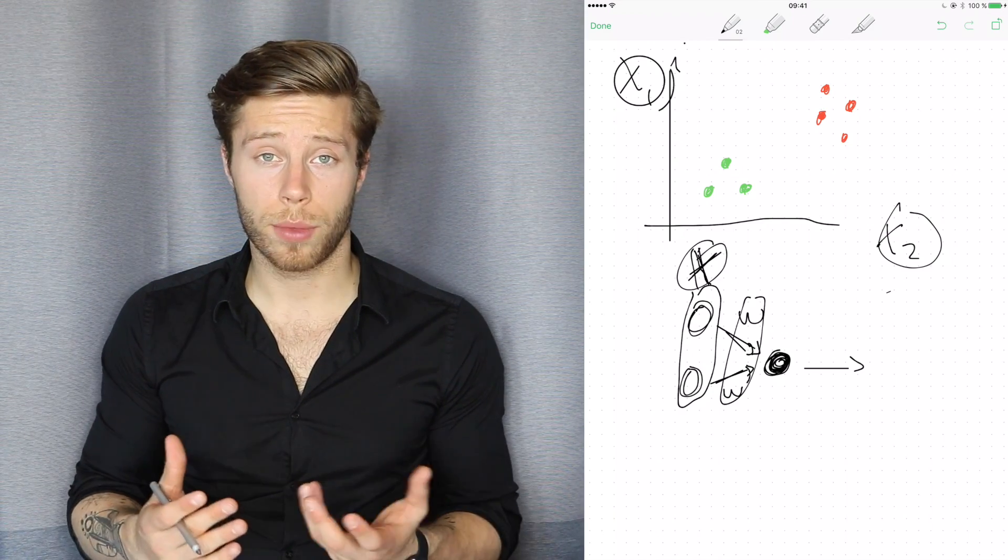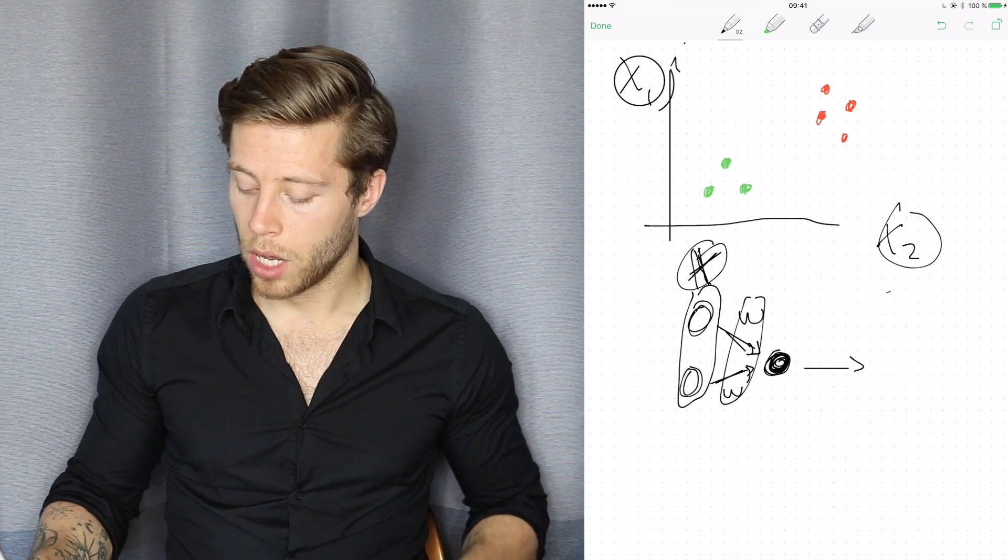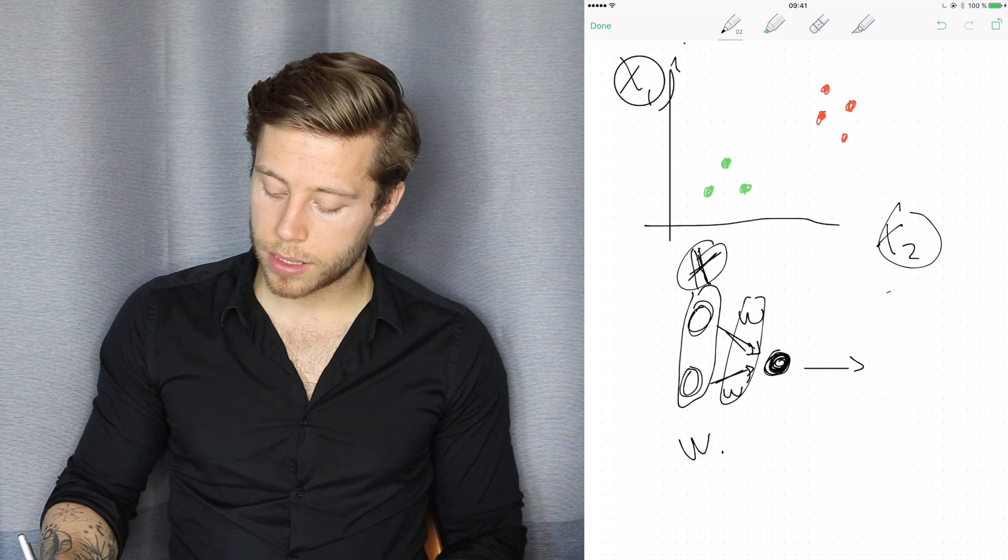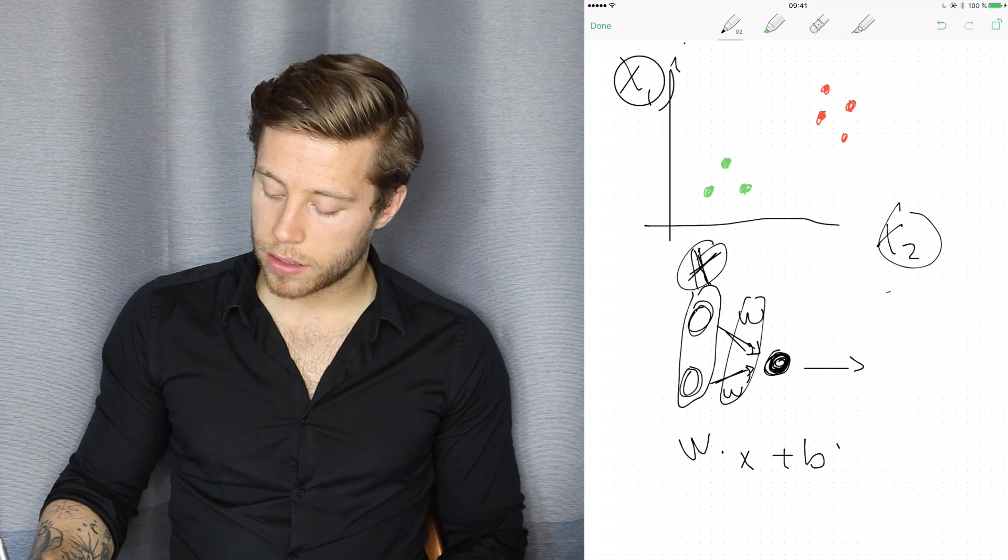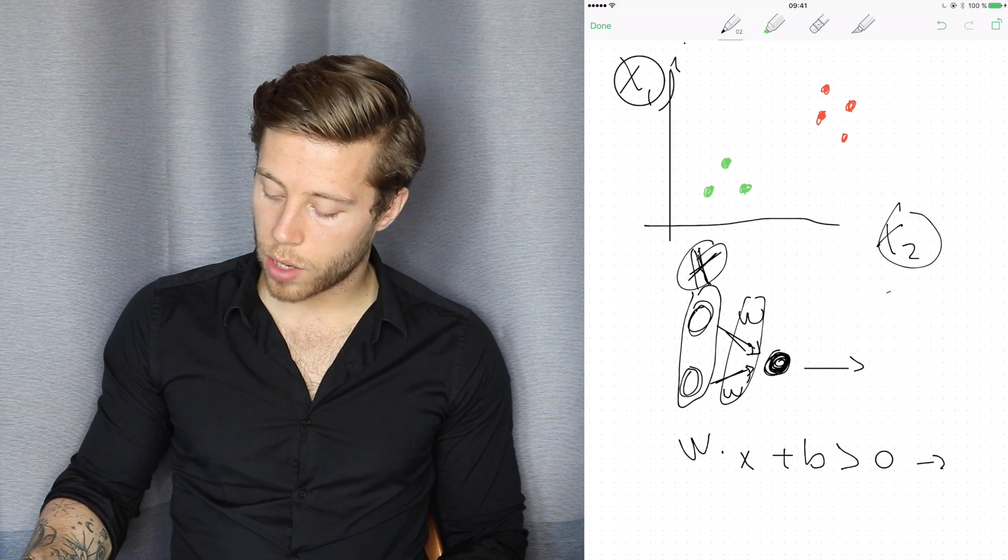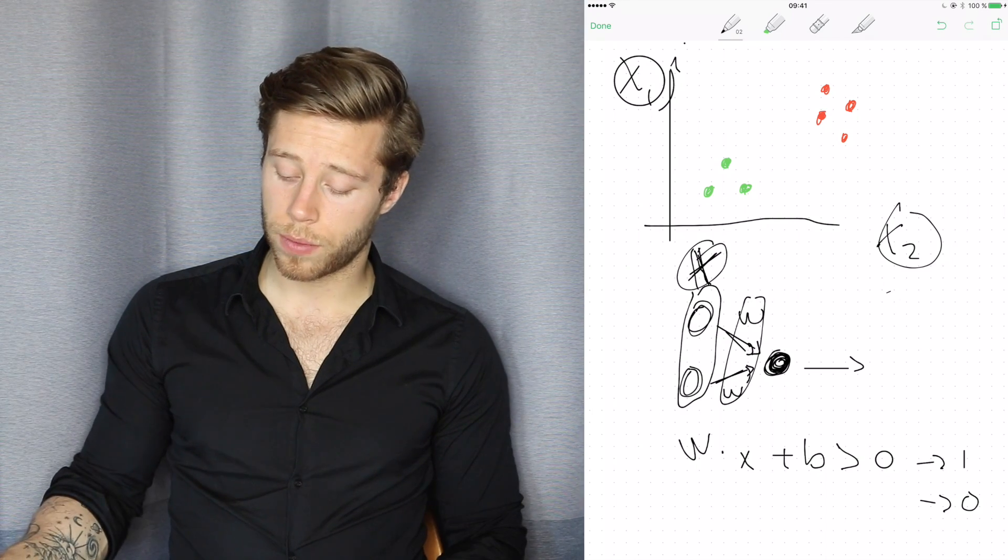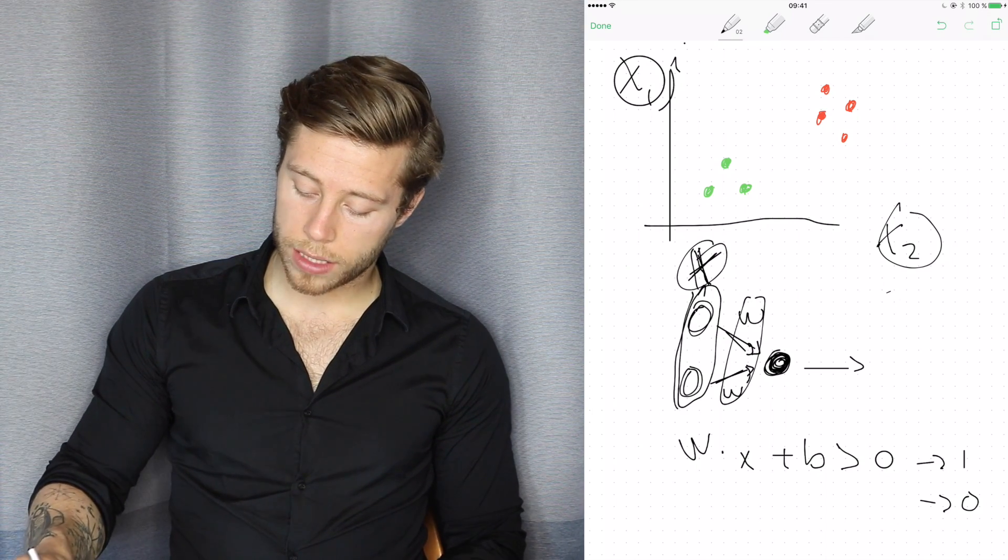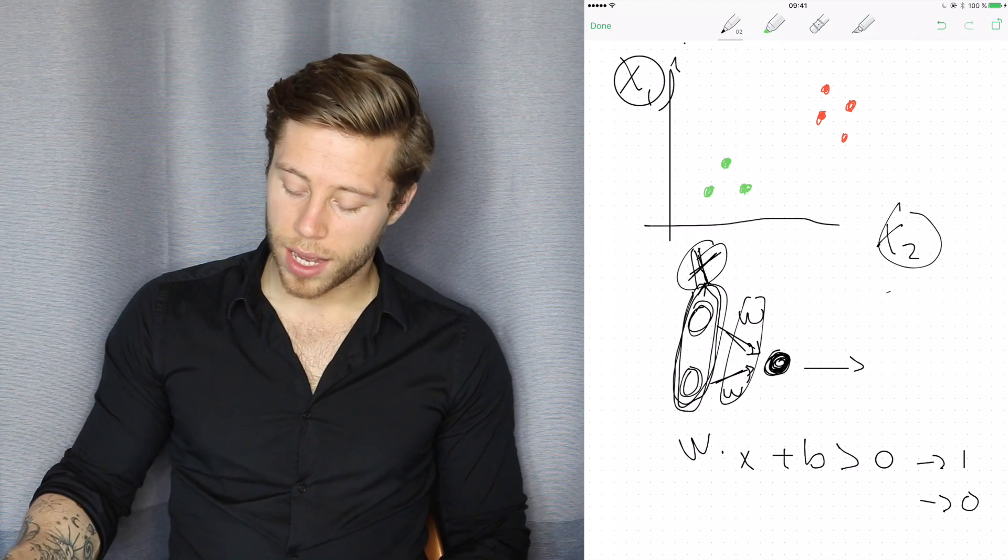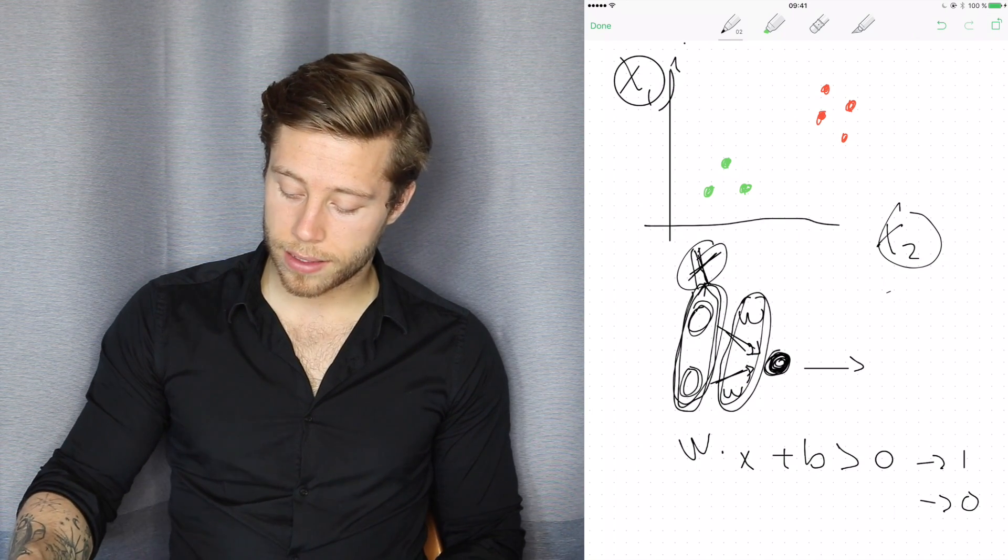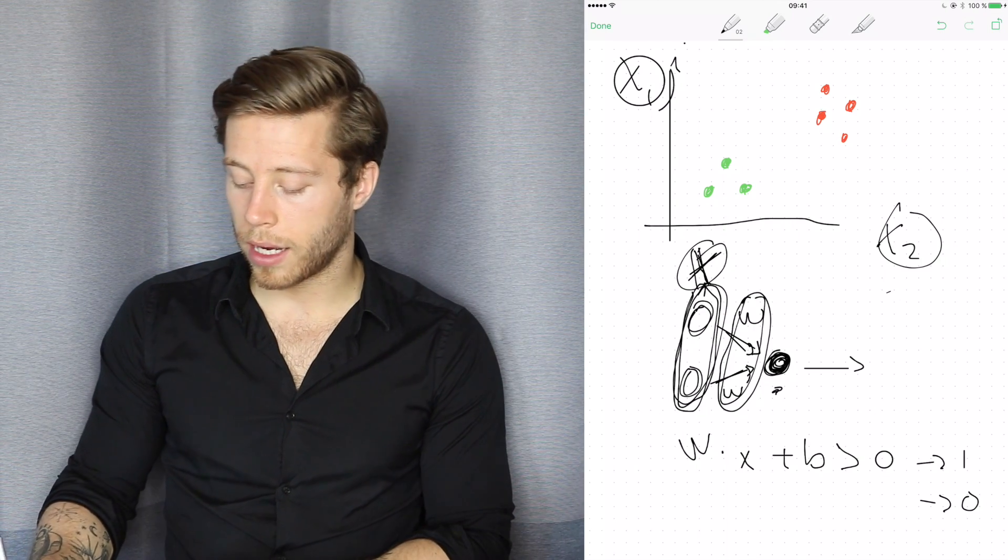So let's talk about the algorithm it uses or the calculation it does for actually calculating its output. The algorithm we use is W times X plus B. If that is larger than 0, we output a 1. Otherwise, we output a 0. And what does this mean? Well, we have our weights here that we talked about. We have our input here that we multiply with our weights. And then the Perceptron does something and then it outputs something.